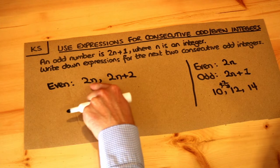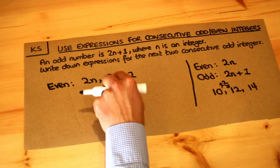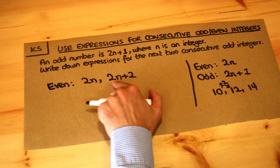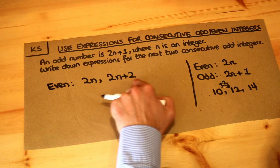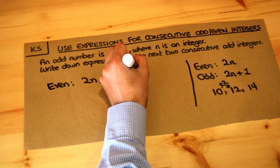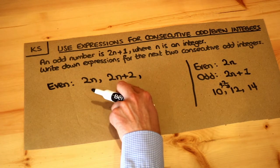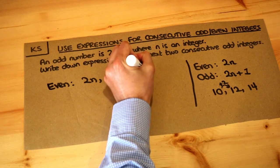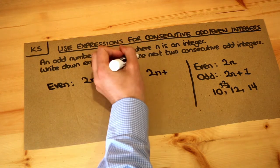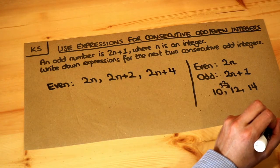For some reason, some students think that when you do 2n and add 2, you get 4n. You don't — it's 2n plus 2. You can't simplify that further because these are not like terms; they can't be collected together. Then if you wanted to get the next one, you would add 2 again, giving 2n plus 2 plus 2, which is 2n plus 4.